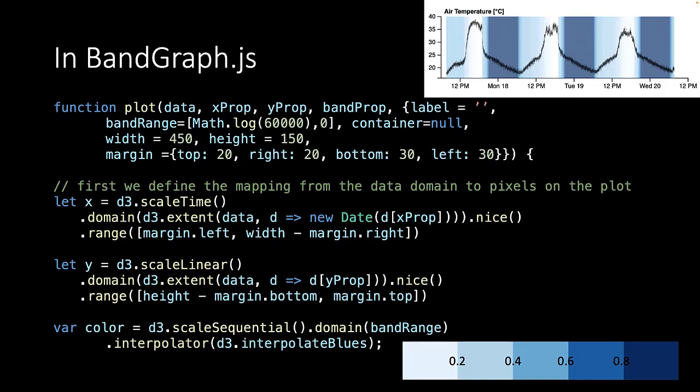We start again by defining the X and Y scaling methods. In this case, the Y scaling method is only used for the air temperature. What is new is the color scale. It maps the ambient light domain values to RGB colors using an interpolator. D3 offers a whole range of color sequences. We use the interpolated blues.